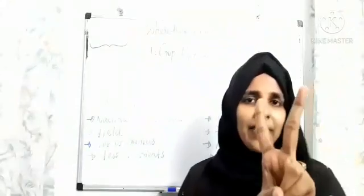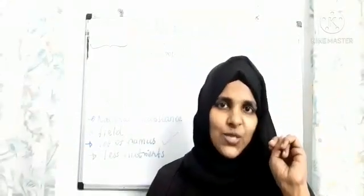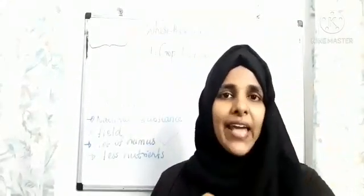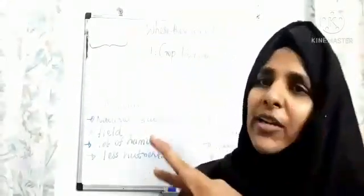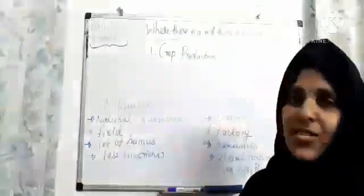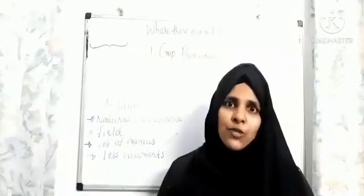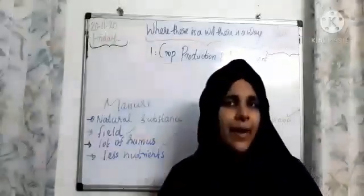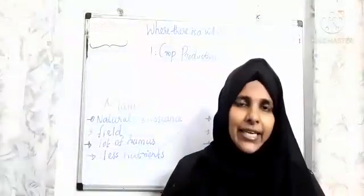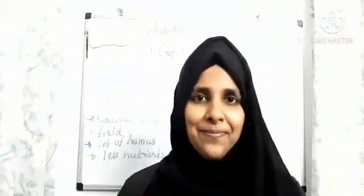In this class, we discussed two methods of agricultural practices — sowing and adding manures and fertilizers. All should read the chapter thoroughly. In the next class, we will discuss the rest of the practices in agriculture. We can meet in our next class. Thank you.